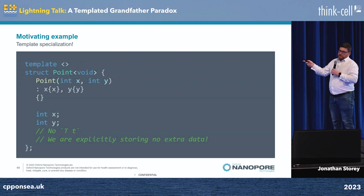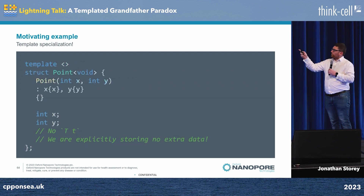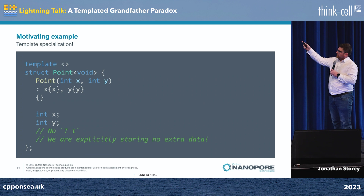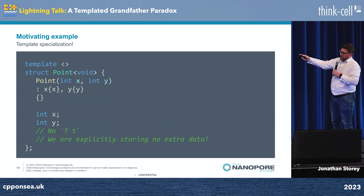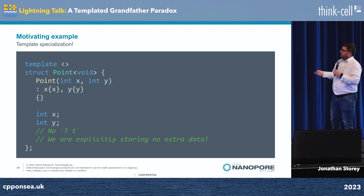So we make a template specialization. We've got point of void. We've got lots of duplicated code and no T. It all works.